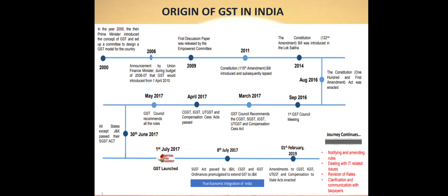Four important acts were enacted: the Central GST Act, Integrated GST Act, Union Territory GST Act, and Compensation to States GST Act. Similarly, on different dates in April, May, June, and July, different states passed their own State GST laws in their legislature. Finally, in May 2017, the GST Council recommended all the laws and rules applicable for GST. By 30th June 2017, all states except Jammu and Kashmir passed their state acts, and from 1st July 2017, GST was implemented in India.